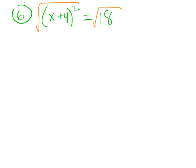And on the left, my square and my square root cancel, and I just get x plus 4. And then when I take the square root of 18, that's actually going to be plus or minus the square root of 18.